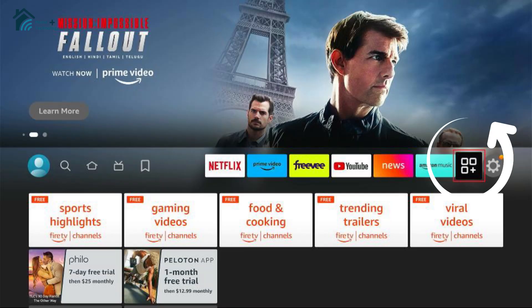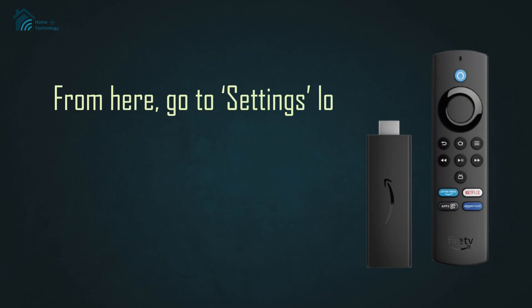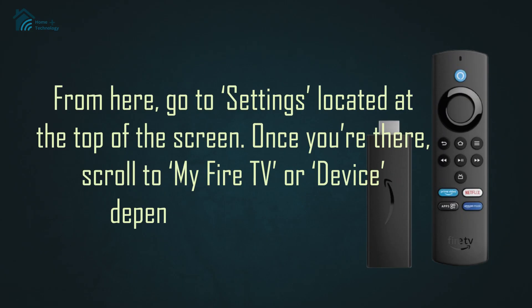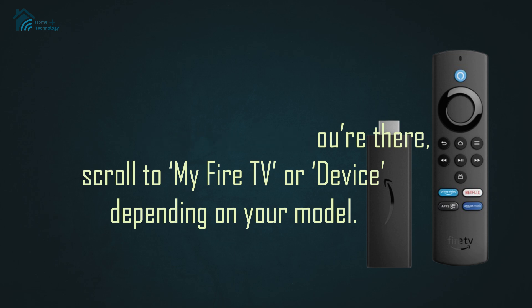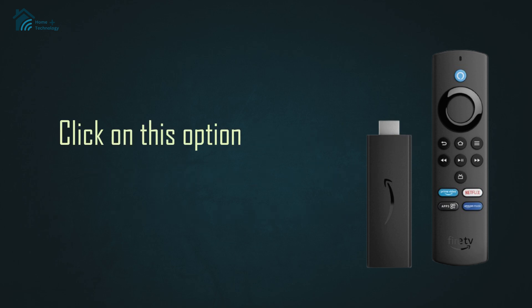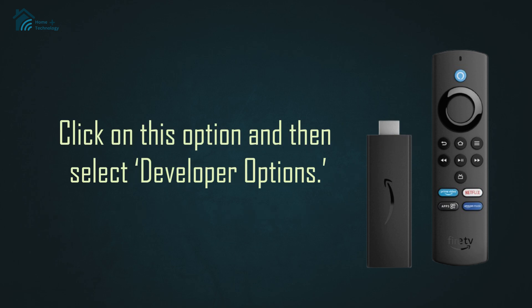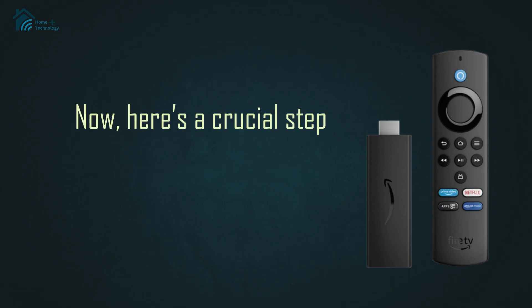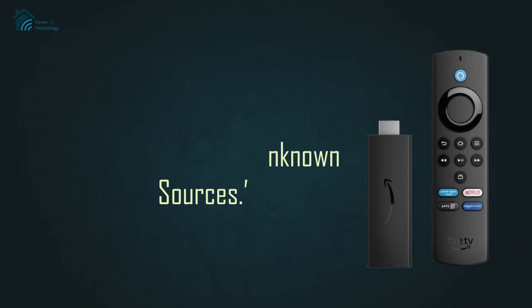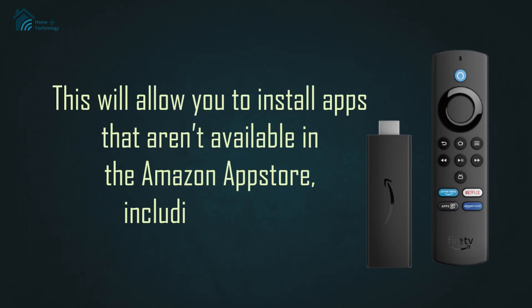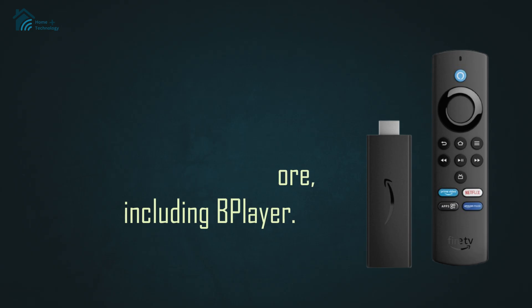First up, grab your Fire Stick remote and navigate to the home screen. From here, go to Settings, located at the top of the screen. Once you're there, scroll to My Fire TV or Device, depending on your model. Click on this option and then select Developer Options. Now, here's a crucial step: turn on Apps from Unknown Sources. This will allow you to install apps that aren't available in the Amazon App Store, including B-Player.